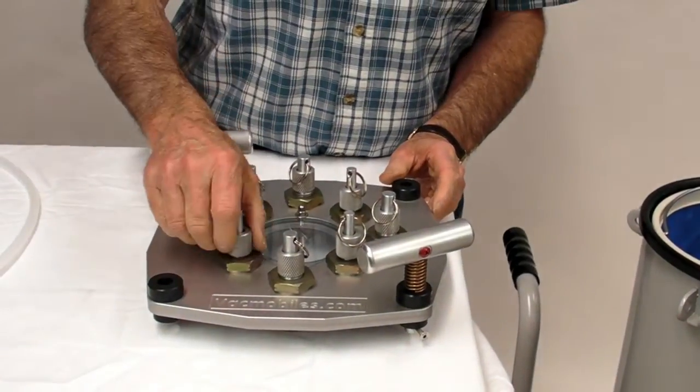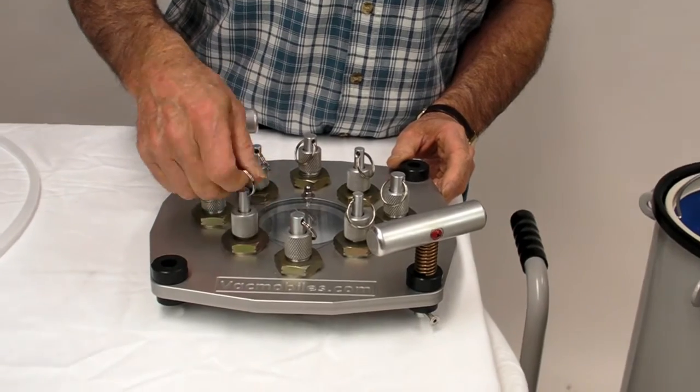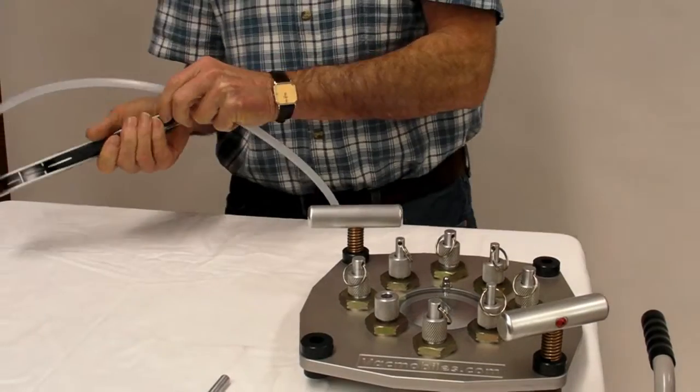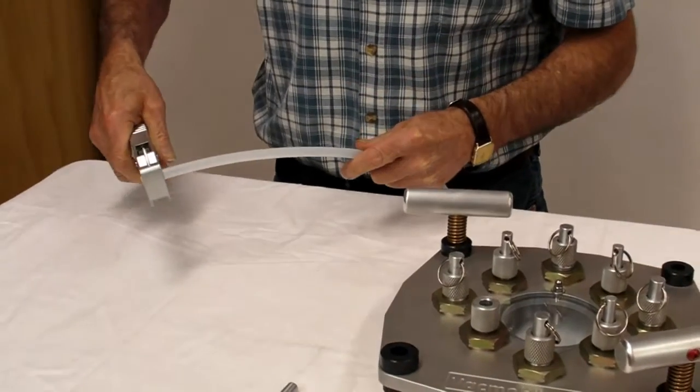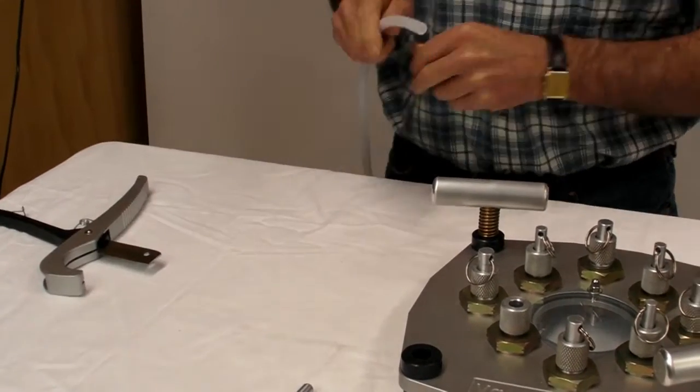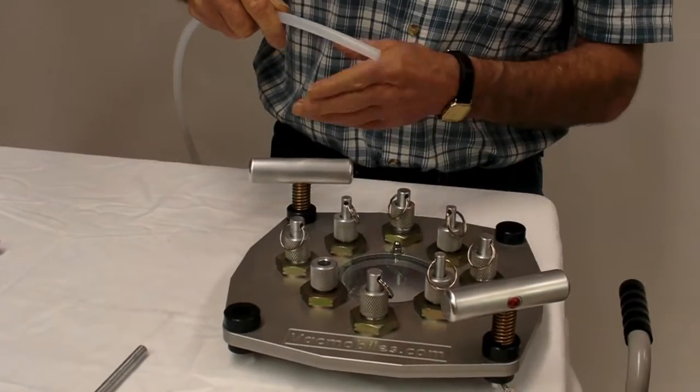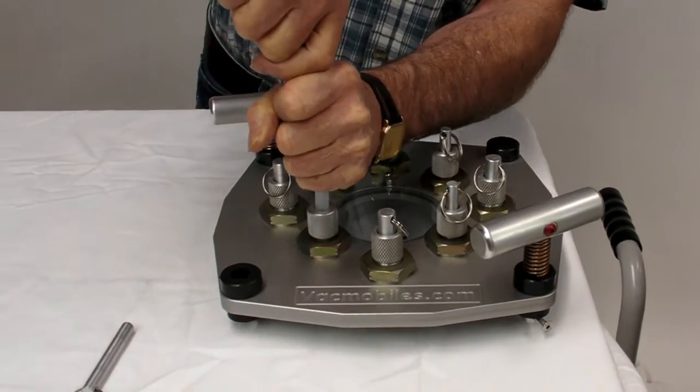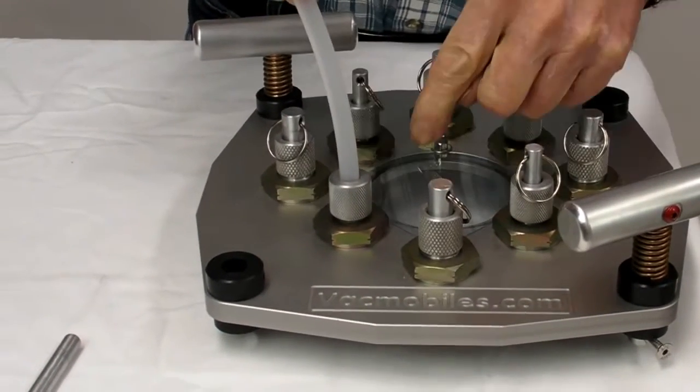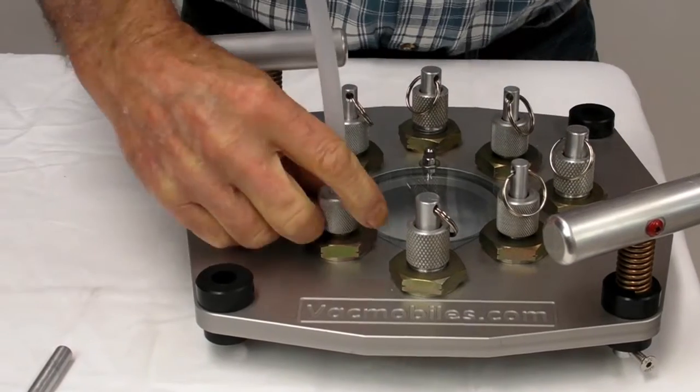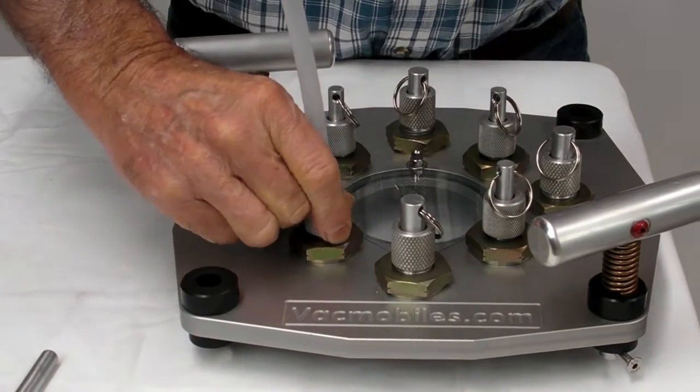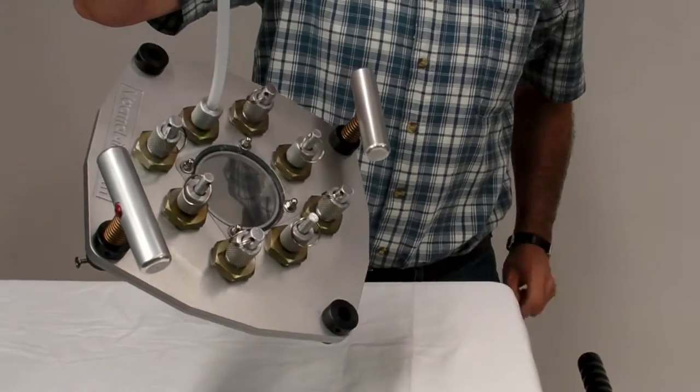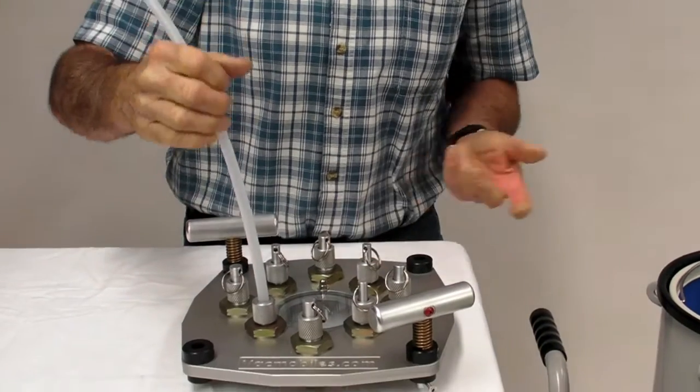When you're ready to put a tube in, you just loosen one of these gland nuts about half a turn, take out the plug, get yourself a piece of tube, cut the end off so that the end of the tube is not damaged and has a square cut. Push it down through the O-ring into the gland fitting and tighten this up. Now you have a strong joint, leak tight, without any mastic, very quick to do.